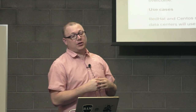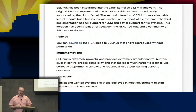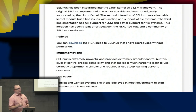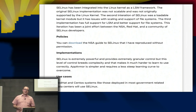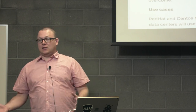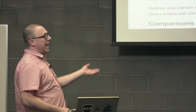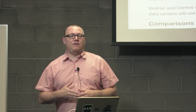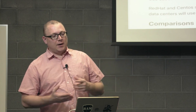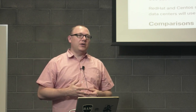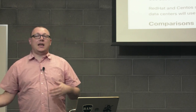SELinux is integrated into your kernel as an LSM framework, using those hooks made available by the kernel. The original SELinux was not scalable — it's one of the reasons why the LSM framework was developed. Linus Torvalds sent them a loving and supportive message and told them to go back to the drawing board. They came back with a second edition as a loadable kernel module, but it still had issues with scaling and file system support. A third implementation then had full support for LSM and better support for all file systems, and that iteration has become a joint effort between the NSA, Red Hat, and a community of SELinux developers.